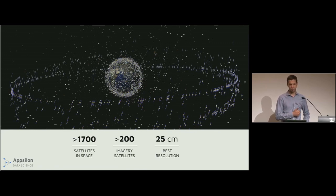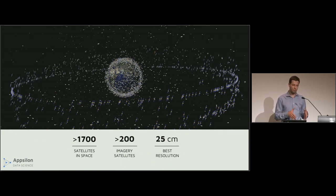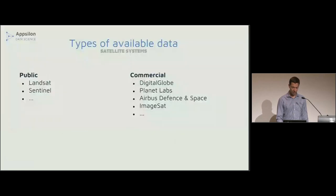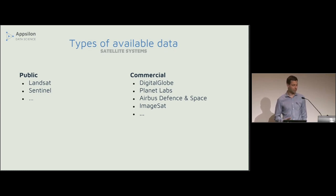One provider already has 170 imagery satellites, so the overall number is likely even bigger. The best resolution we can get gives us one pixel per 25 by 25 centimeters — imagine a standing person seen from above giving us around three pixels, which is amazing. We have public programs like Sentinel and Landsat which give us free photos good enough for many use cases, and several commercial providers offering even better photos with improvements every month.